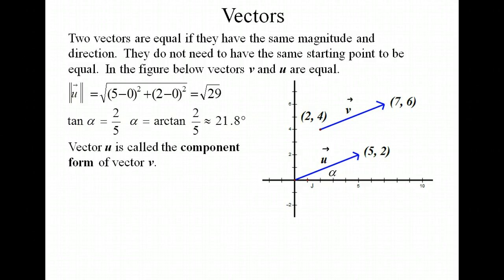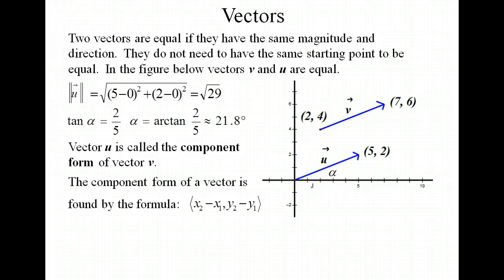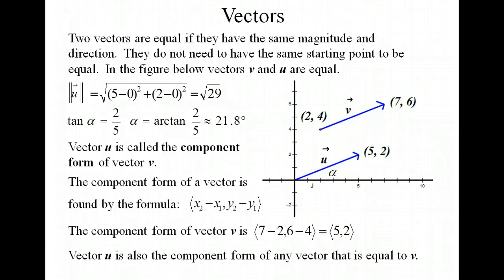We have a special name for vector u. It's called the component form of vector v. It's the component form of a vector when the starting point of the vector is at the origin. You can easily find the component form of a vector by subtracting your x coordinates and subtracting your y coordinates. So for vector v, in order to find vector u, all we would do is subtract our x coordinates, which are 7 and 2, and then subtract our y coordinates, which are 6 and 4. And that's how we get vector u, which is 5,2. Vector u would also be the component form of any vector that is equal to vector v, because they would all have the same size and the same direction.